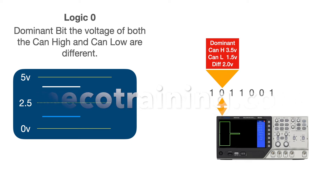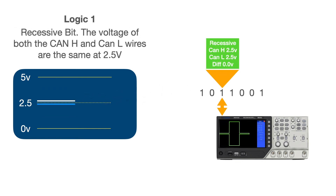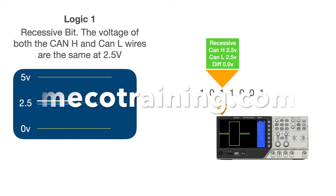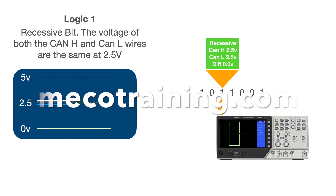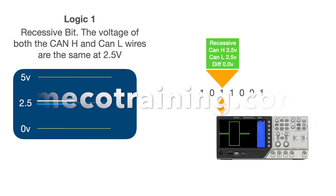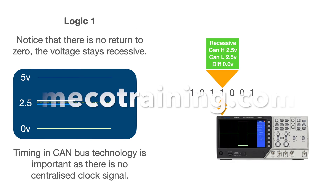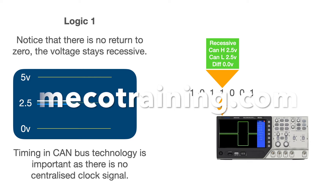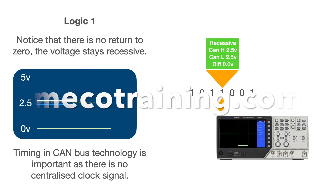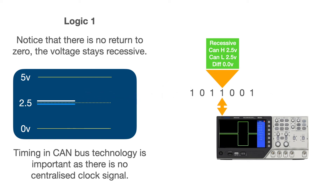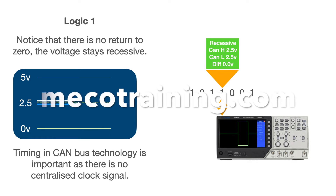Let's look at the next bit — we're back to a logic one recessive state, shown by zero voltage between the CAN High and CAN Low wires. Notice that the next bit is also a one, so the status of the CAN wires just remains the same for the next bit event. This is what we call no zero return, as the voltage does not go to zero from one bit to the next. The transmitting device effectively just sends a slightly longer bit, and as the timing between devices is matched so well, they all know this represents another separate bit of the same logic state — in our case, two ones.